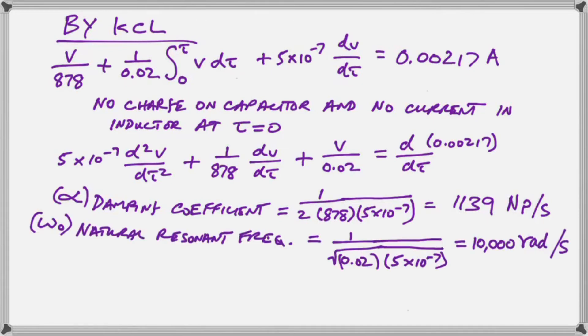And our natural resonant frequency of this parallel resonant circuit is 1 over the root of LC. So we have L and C there under our square root and we work that out and we see that this parallel resonant circuit has a natural resonant frequency omega naught of 10,000 radians per second.